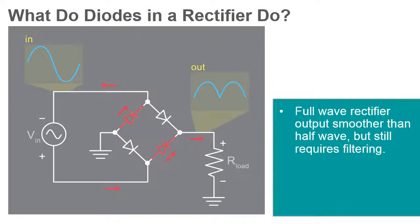Although the full-wave rectifier produces a smoother, unidirectional output than the half-wave rectifier, neither of them produce a constant voltage. To achieve steady DC from a rectified AC supply requires a smoothing circuit or a filter.